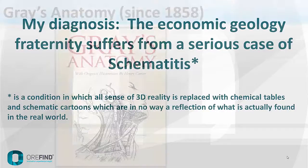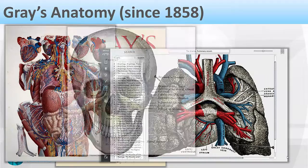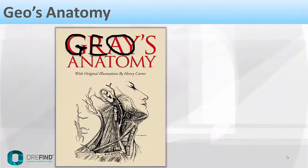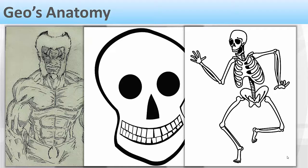I think everyone is familiar with Grey's Anatomy, even though they've never looked through it. This anatomy book was published in 1858, and it has wonderful, really detailed illustrations of the human body. Let's just imagine if a geologist had actually written this book. It would look something like this: schematic diagrams and cartoons of the lung, the skull, and the skeleton — completely schematic, nothing realistic.